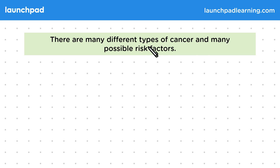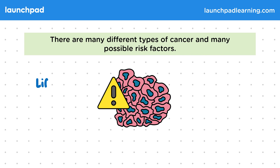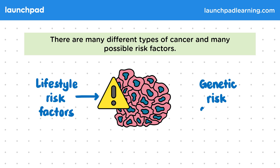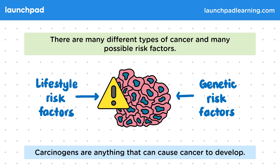There are many different types of cancer and many possible risk factors. These are cancer cells, and scientists have identified both lifestyle and genetic risk factors for some types of cancer. Carcinogens are anything that can cause cancer to develop. What are the major carcinogens or risk factors for cancers?